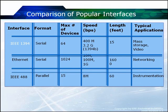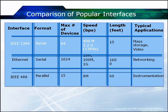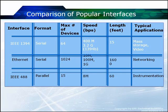IEEE 1394, better known as FireWire, is a serial protocol. You can have up to 64 devices. It runs at 400 megabits per second in 1394A, which is comparable to USB, but 1394B is faster than USB 2.0 at 3.2 gigabits per second. Maximum length is 15 feet, and it's used mainly for mass storage and higher-end video — making it a bit more expensive and potentially cost prohibitive in standard desktop or laptop environments.